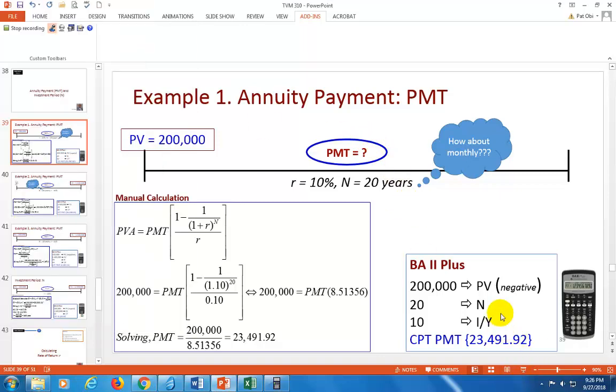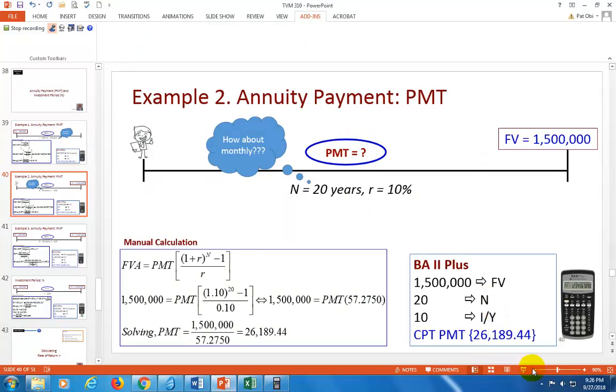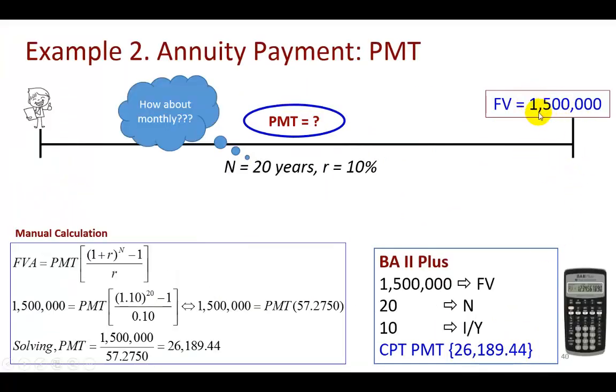Let's look at the second example right here. In this second example, we have a future value. This is probably a case where you're saying, I wonder what the annual payments I should be making into some investments so that 20 years from now I'm going to get $1.5 million, knowing that I'll be earning 10% per annum. So this $1.5 million would represent the future value of an annuity. If you define it, substitute and solve, it's going to be $26,189.